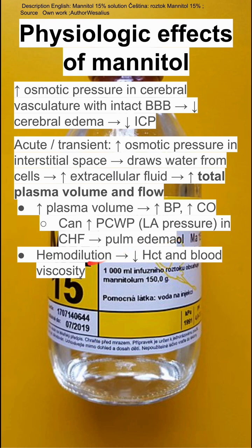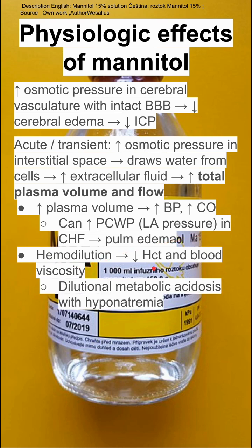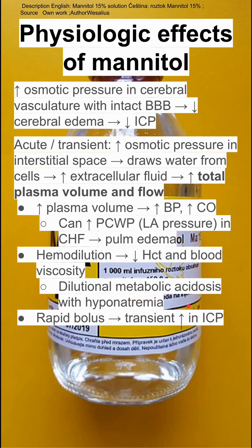This increased plasma volume can also cause hemodilution, which can decrease your hematocrit and your blood viscosity. Dilutional metabolic acidosis and hyponatremia can also result.